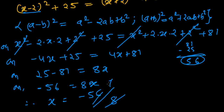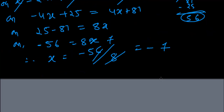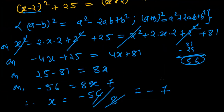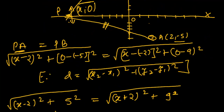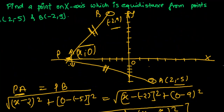Therefore x = −56 ÷ 8 = −7, since 8 × 7 = 56. So the value of x is −7 and the required point P is (−7, 0). This is how we solve this problem.